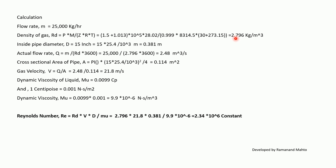Inside pipe diameter D = 15 inches, converting to 0.381 meters. Actual flow rate Q = M / (ρ × 3600) = 2.48 m³/s. Cross-sectional area A = π × D² / 4, with D = 15 × 25.4 mm, giving A = 0.114 m². Gas velocity V = Q / A = 21.8 m/s.